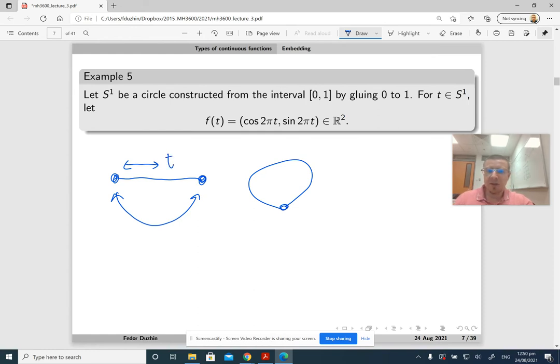Then we can map t to the point on the plane at (cos 2πt, sin 2πt), so this is x and this is y on the plane. And this is going to be an embedding of this abstract circle to the plane, and then this embedding is actually the familiar circle that we learned about in probably kindergarten.